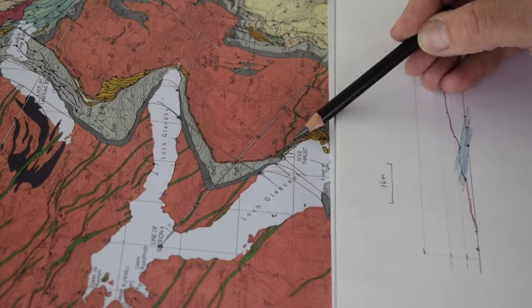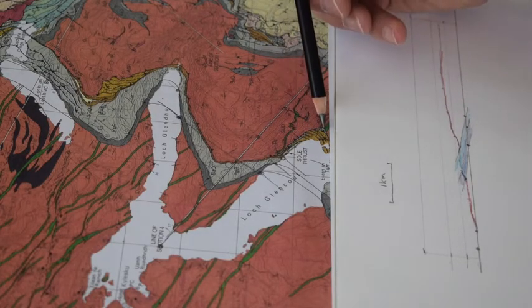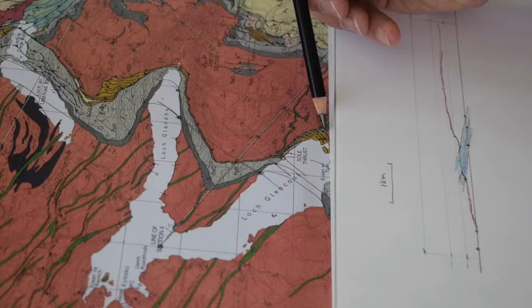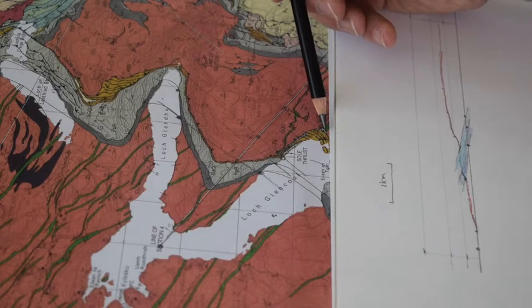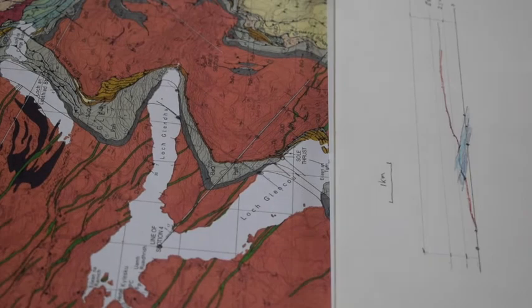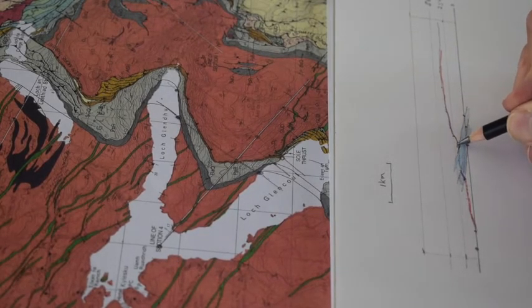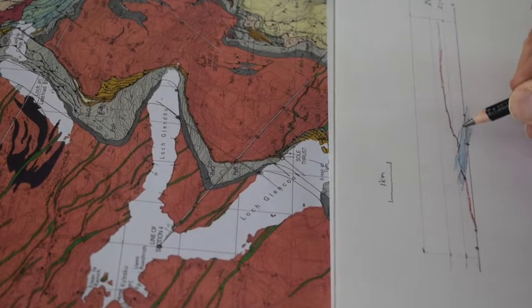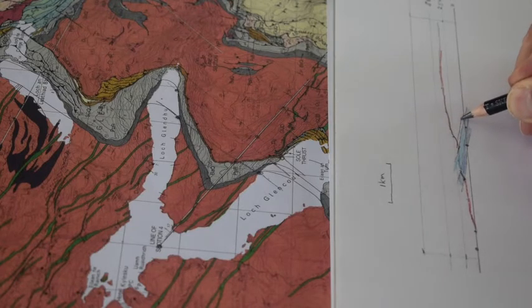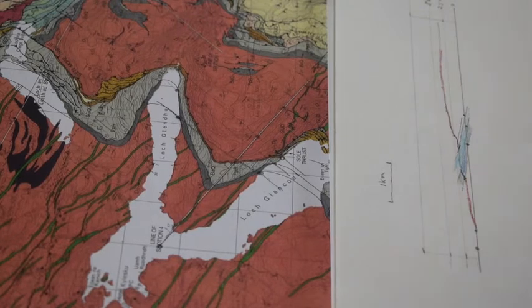but then runs just above the shoreline till it reaches this position further back in Glencoul. So we can take some of this insight onto the cross section. We can take our thrust down like this to almost sea level, but then we're going to have to make a decision. So I'm going to stop a minute and have a think.